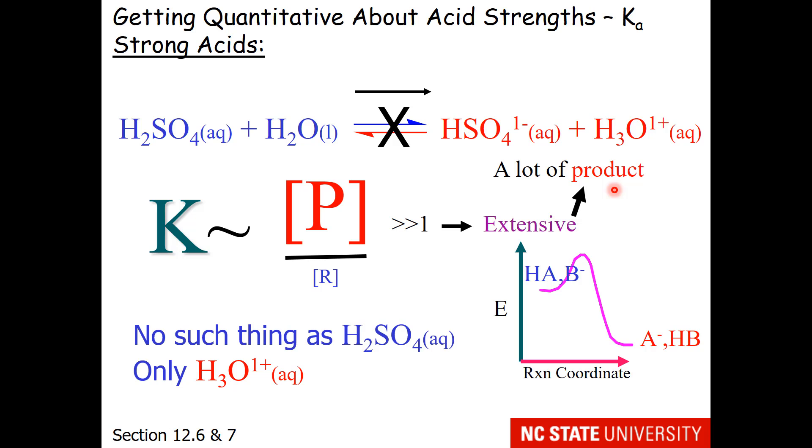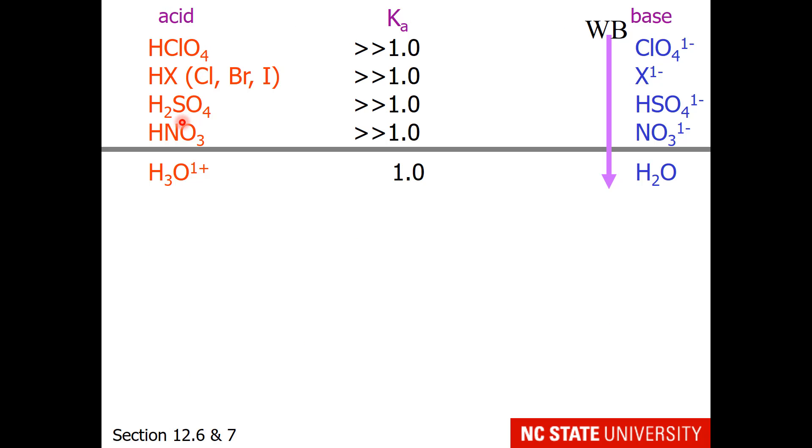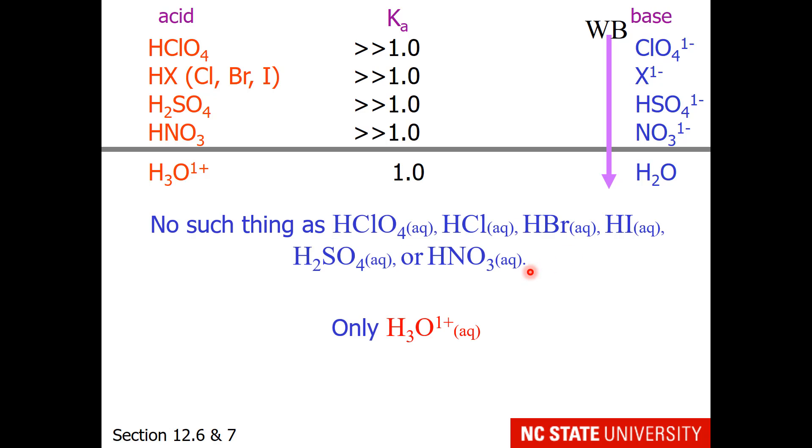So there is no such thing as aqueous sulfuric acid. There is only hydronium and the conjugate base. So if we look at our acid base table, the Ka values for the strong acids are not really measurable in water. They are very large numbers. Hydronium is the strongest acid you can have in water. So there is no such thing as these aqueous acids, only hydronium. And maybe you remember earlier in chapter 10 when we started going over strong electrolytes, and I asked you to memorize the 6 strong acids.